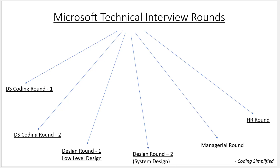Your next round will be the system design round. If you have 10-11 years of experience, sometimes two system design rounds can happen — one dedicated round and possibly a question from the hiring manager as well. So to summarize: two to three coding rounds, one low level design round or a combination, and one system design round, then comes the hiring manager round.